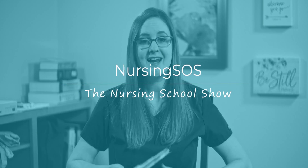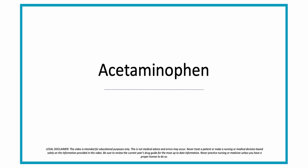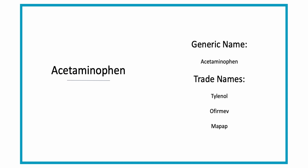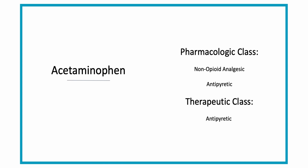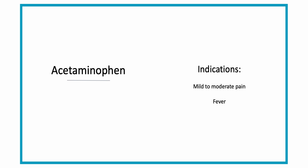Now let's talk about acetaminophen. The generic name is acetaminophen, the trade names are Tylenol, Ofirmev, and Mapap. The pharmacologic class is a non-opioid analgesic and an antipyretic, and the therapeutic class is an antipyretic. The indications for acetaminophen — what acetaminophen is used for — is treatment of mild to moderate pain and treatment of fever.